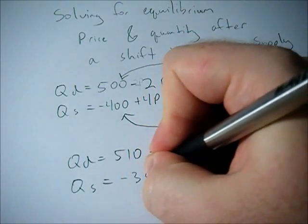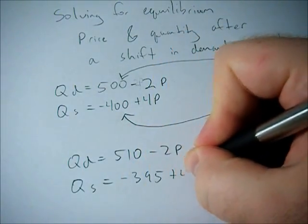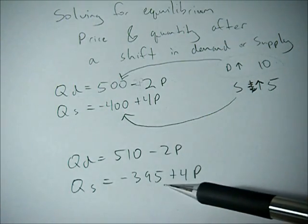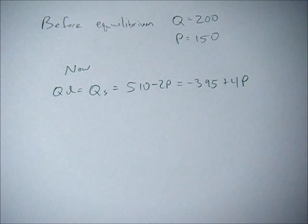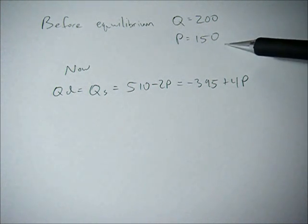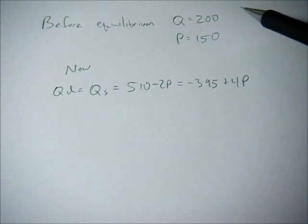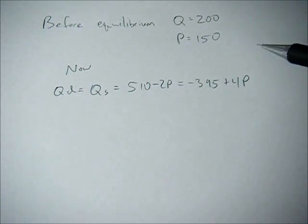Before, equilibrium quantity was 200 and our equilibrium price was 150. Now we can solve for the new equilibrium quantity and price after these shifts by setting the two functions equal to each other.